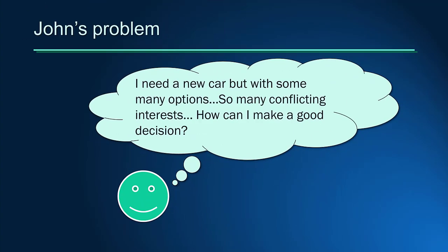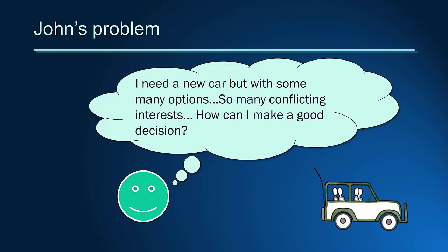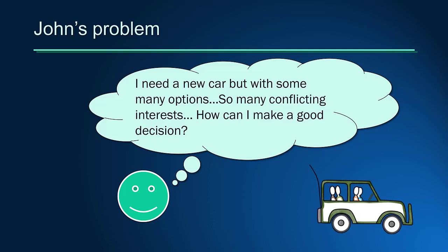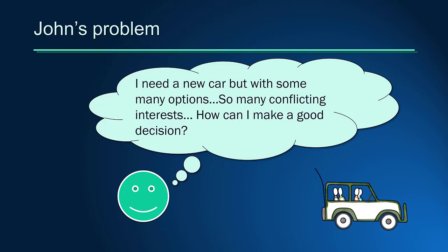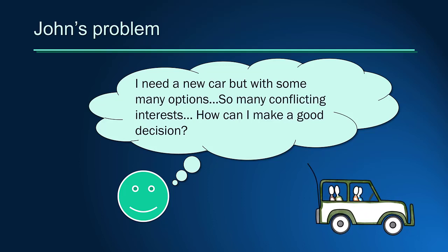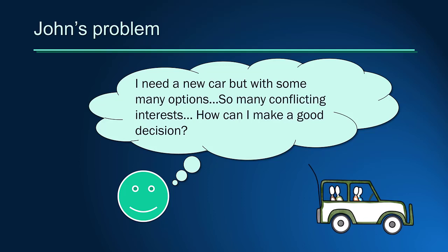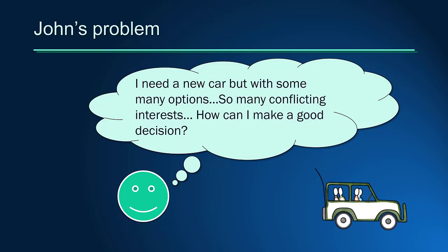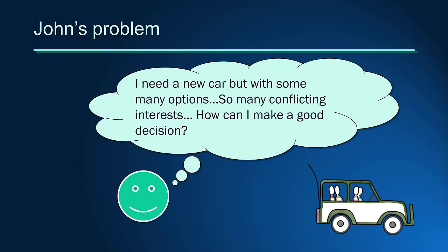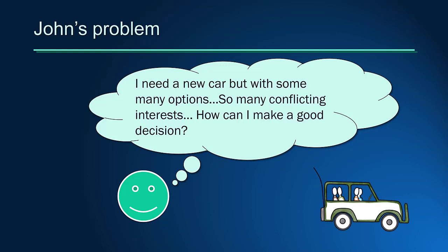First, let's see how the method works in a simple example. John needs to buy a new car, but he is very confused with so many options. He is thinking about a cheaper and fuel-efficient model, but his family is asking for a big and fancy car. His decision involves conflicting interests that are difficult to accommodate. The question is how to find the most suitable alternative that better accommodates all family needs and desires.